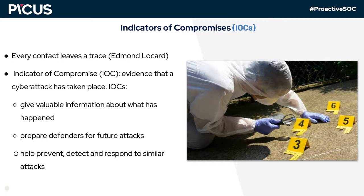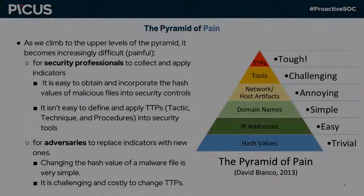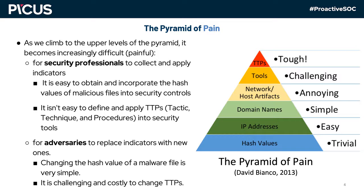The differences between indicators have led to the need for a classification system. A well-known IOC classification, the Pyramid of Pain, was introduced in 2013 by cybersecurity expert David J. Bianco. Bianco illustrated the value of each indicator type in this pyramid, naming it the Pyramid of Pain because each level is proportional to the pain both security professionals and adversaries feel. As we climb to the upper levels, it becomes increasingly difficult and painful for security professionals to collect and apply indicators — but it also becomes harder for adversaries to replace them with new ones.